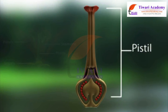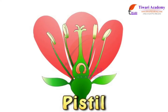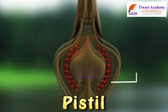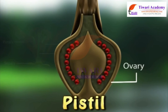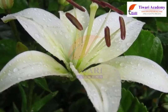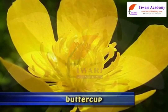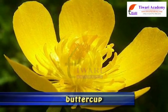Come, let us learn about the pistil in this lesson. The fourth and innermost whorl of the flower is the pistil. It is the female reproductive part of the flower. The pistil consists of a swollen base called the ovary, which contains the potential seeds or ovules, a stalk or style arising from the ovary, and a pollen-receptive tip called the stigma. There may be a single pistil, as in the lily, or several to many pistils, as in the buttercup.